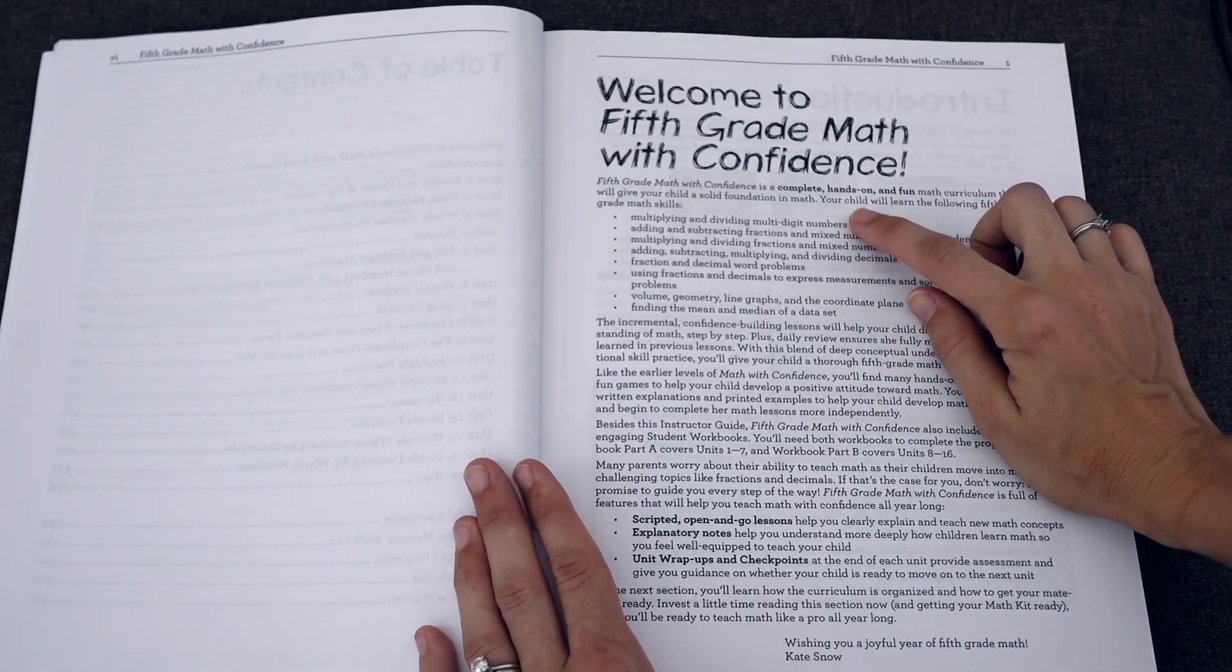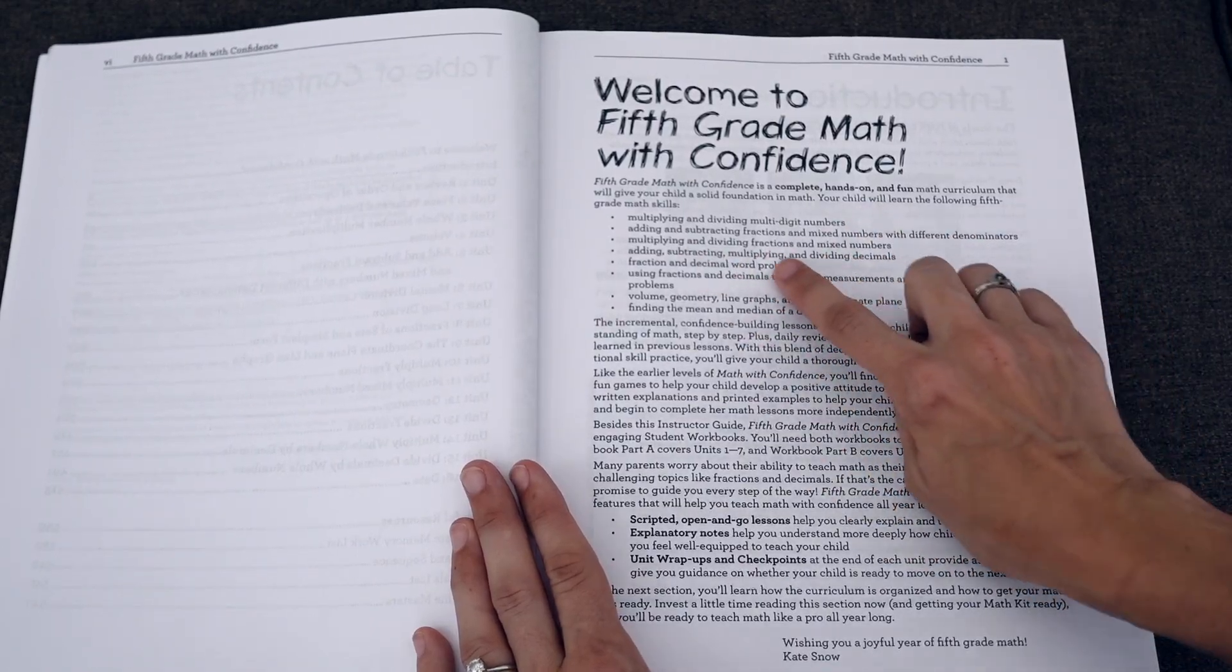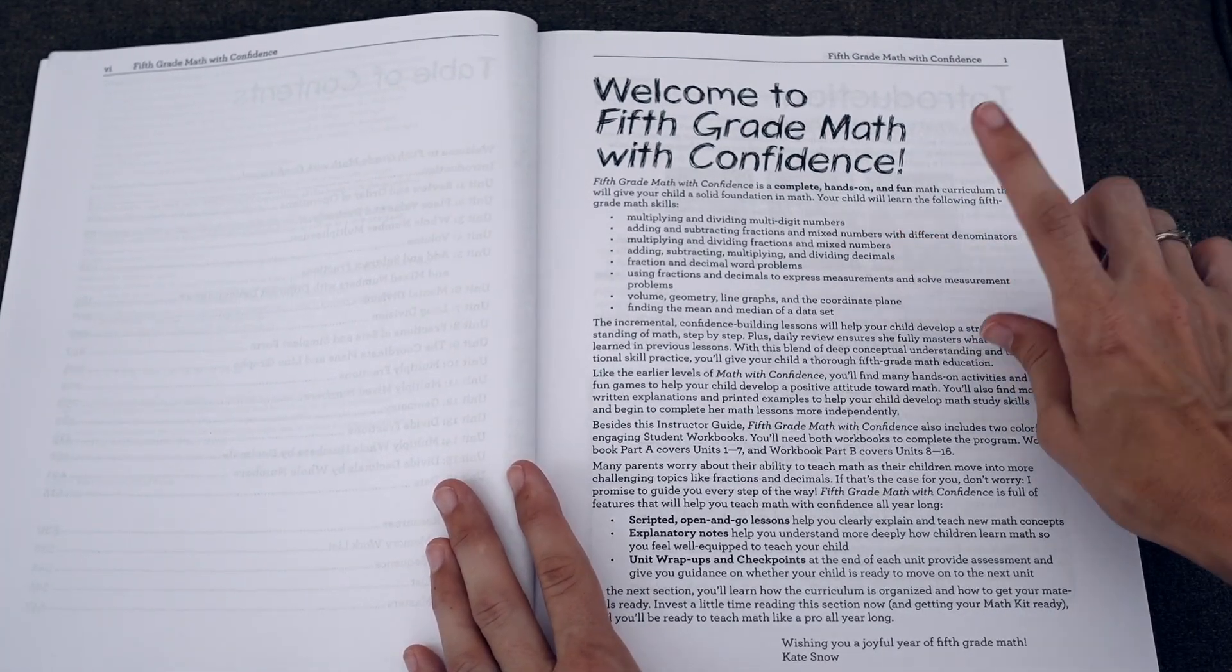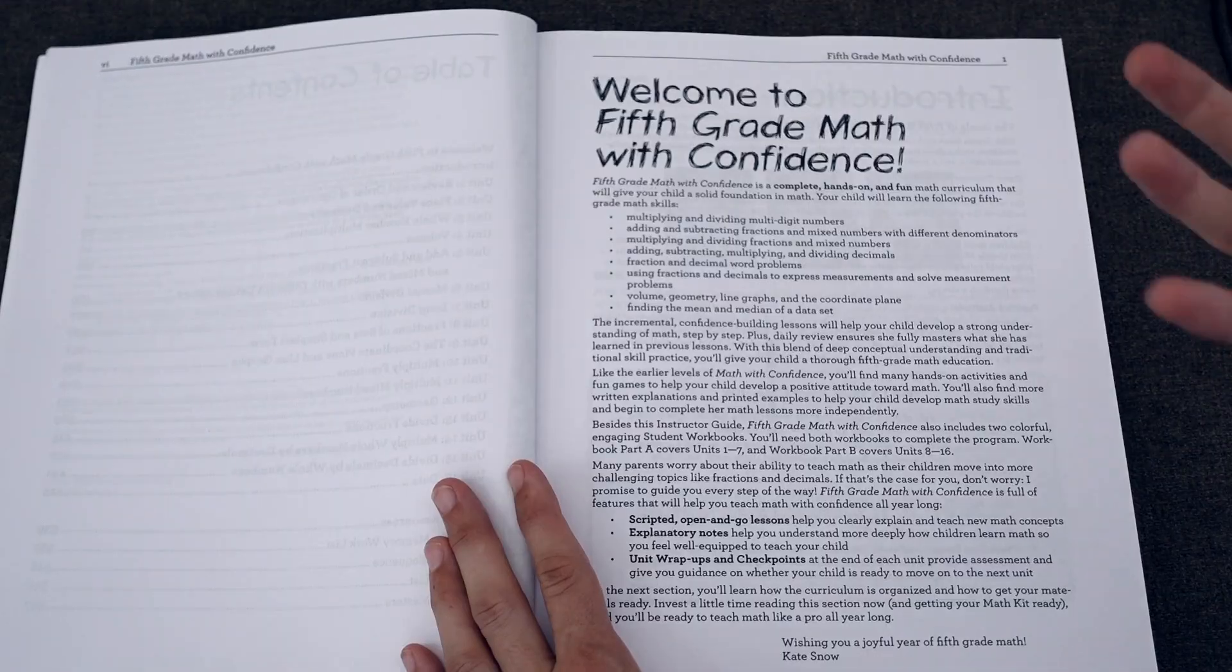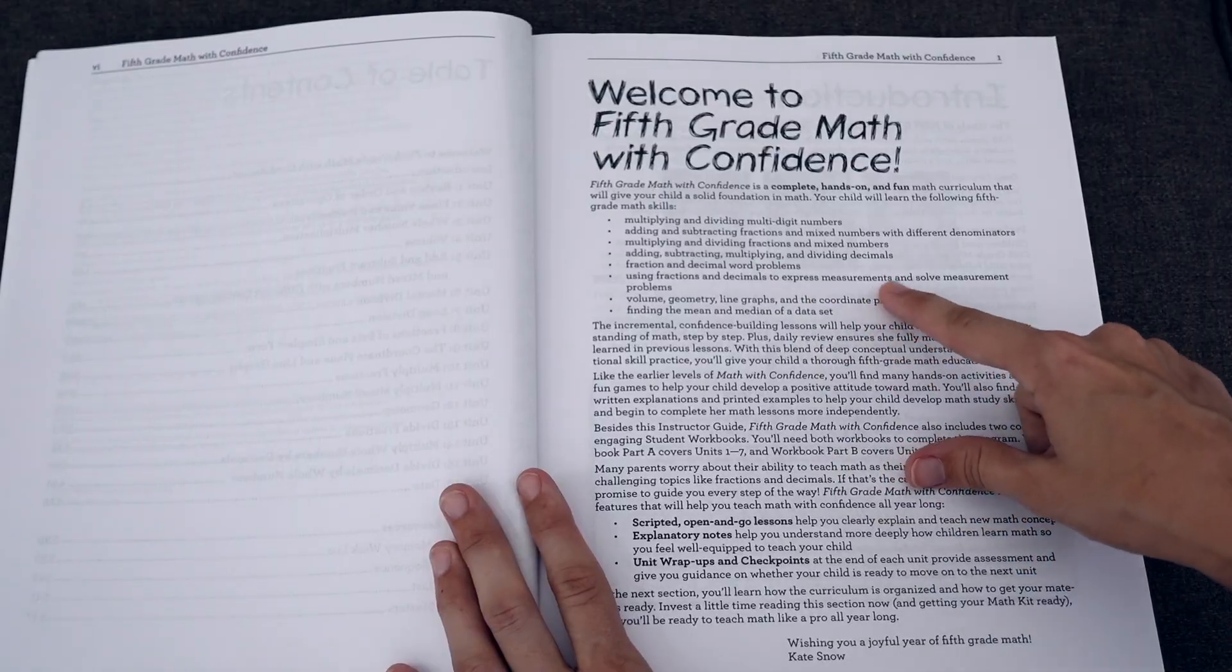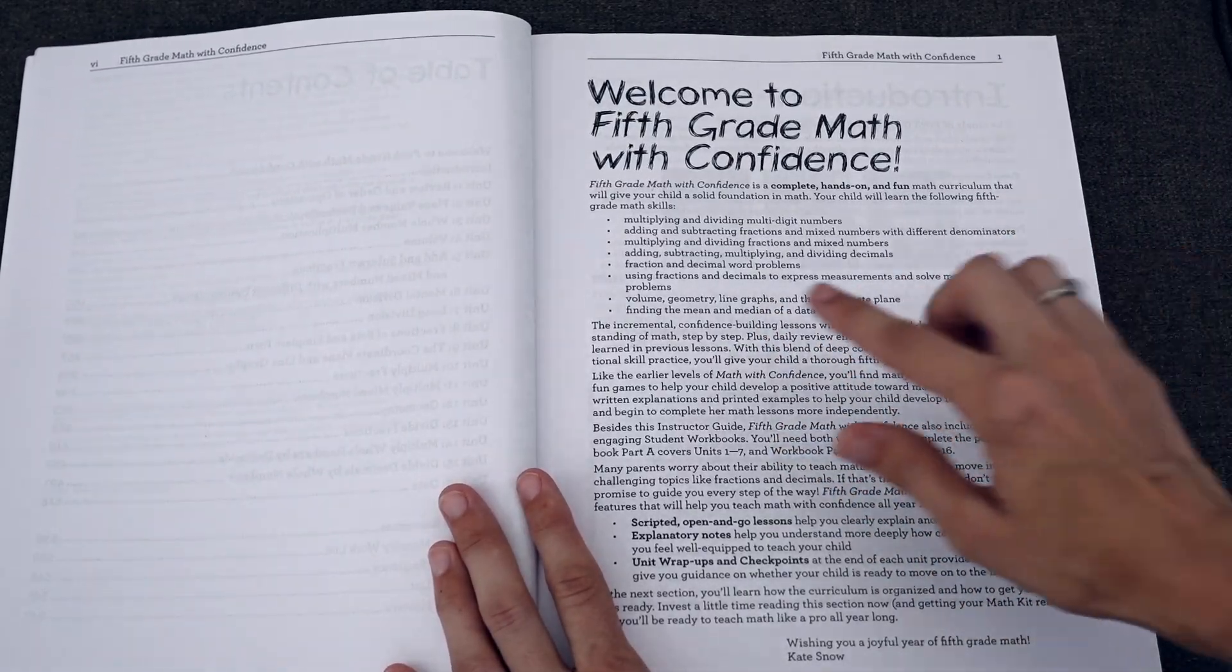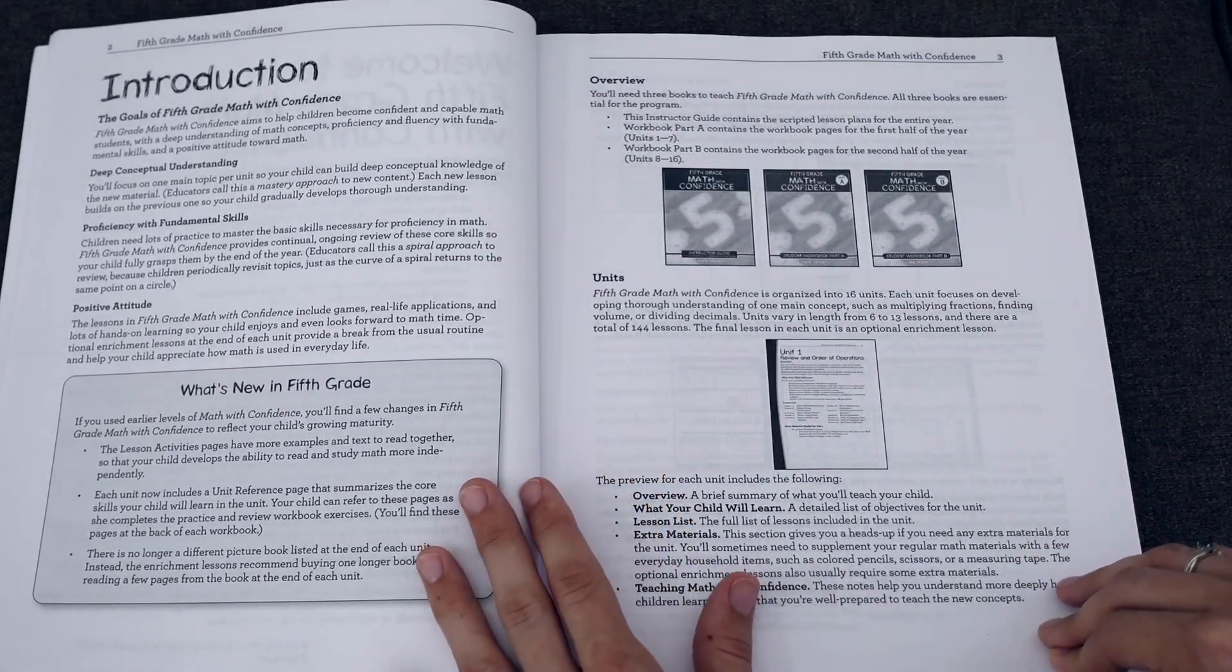Here are some of the topics covered in 5th grade Math. We're multiplying and dividing multi-digit numbers, adding and subtracting fractions and mixed numbers with different denominators, multiplying and dividing fractions and mixed numbers. We get into operations with decimals, fraction and decimal word problems. We're using fractions and decimals to express measurements and solve measurement problems. We do some volume, geometry, some line graphs, the coordinate plane, and finding mean and median of a data set.